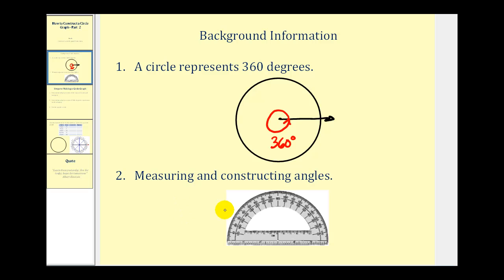And then secondly, it's important that we know how to measure an angle using a protractor as we see here. Because what we're going to do is divide up this circle into sectors to represent each category, based on what percent of 360 degrees that category would represent.